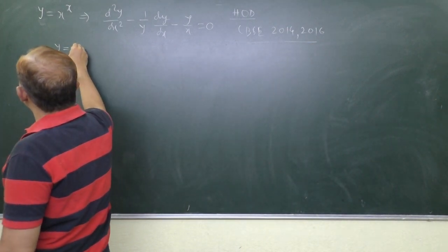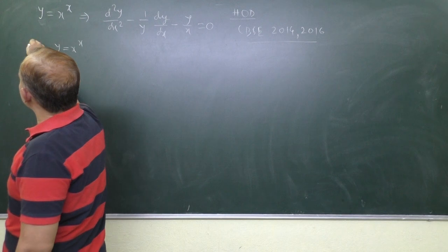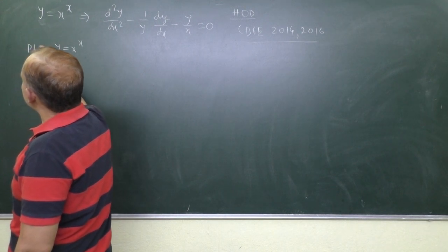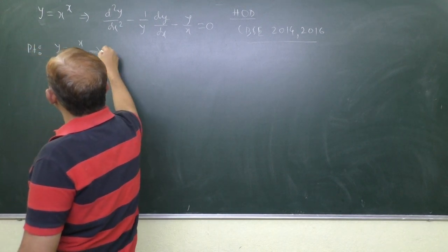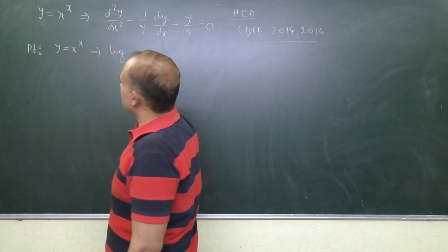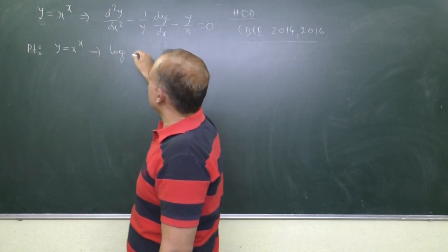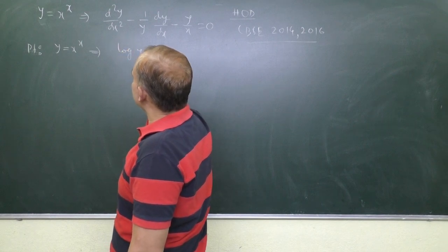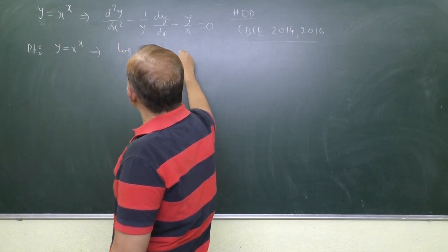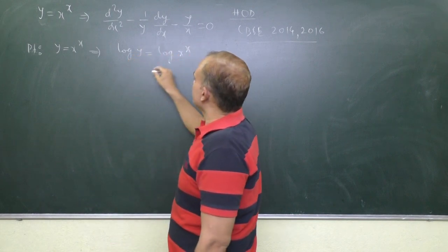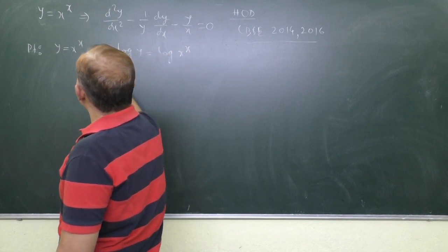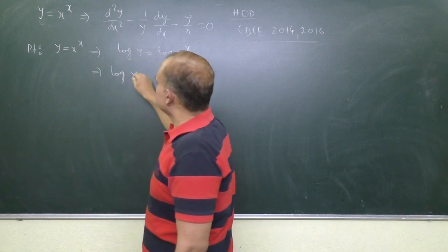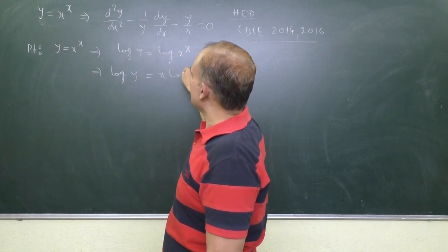So to prove this, y is equal to x to the power x. Let's try to start its proof taking log of both the sides. Log y is equal to log of x to the power x, which you can write as log y is equal to x log x.